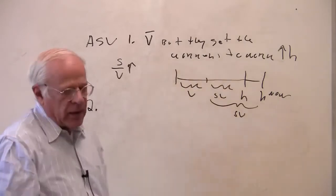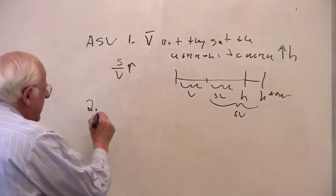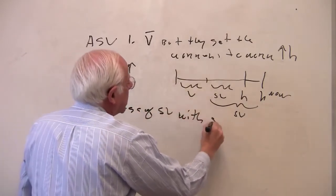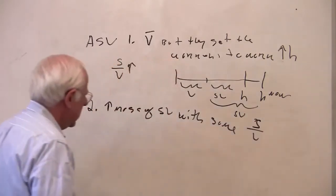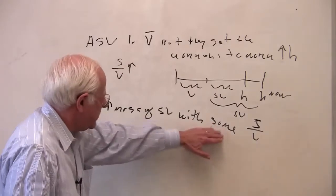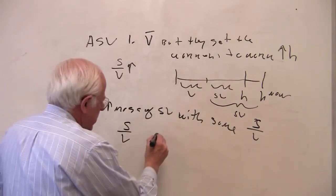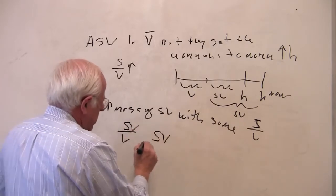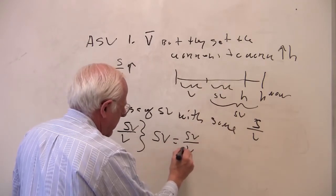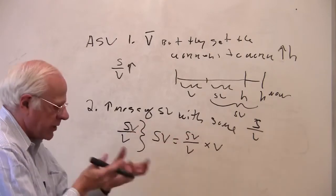A second way that Marx talks about is getting more surplus — expanding the mass of surplus for the capitalists with the same rate of exploitation. To show this, I want to rewrite the surplus equation. Surplus equals (S/V) times V. I can rewrite V as: the value per worker (small v) times L, the number of workers hired, times the number of hours each works.